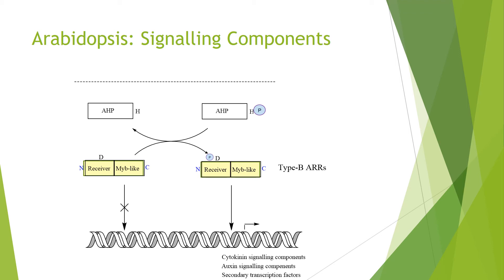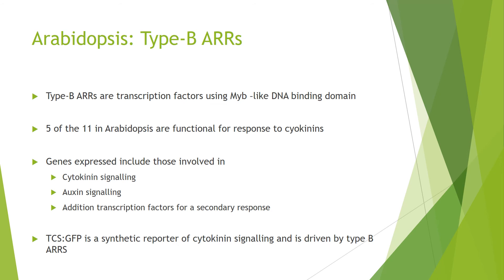There is another parallel system recently discovered called cytokinin response factors, which act downstream of the AHPs and parallel to the type B ARRs. Focusing on type B response regulators, they are transcription factors using the MYB-like DNA binding domain with a receiver domain containing an aspartate residue. There are 11 of these in Arabidopsis; however, only five have been functionally linked to a cytokinin response.